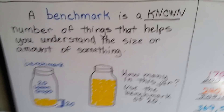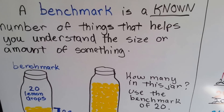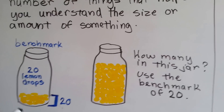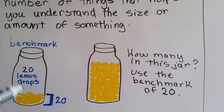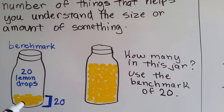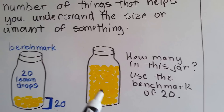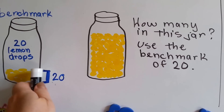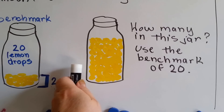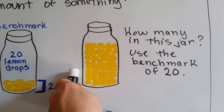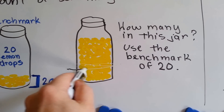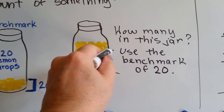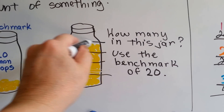The last thing I want to show you is a thing called benchmarks. A benchmark is a known number of things that helps you understand the size or amount of something. So if I've got 2 jars of lemon drops and this is the benchmark jar — we know there are 20 lemon drops right here — could you estimate how many lemon drops are in this jar? All you have to do is figure out: that much is 20, so right there is 20, which means that much is 40, and that much is 60.